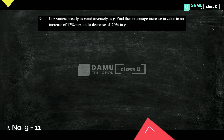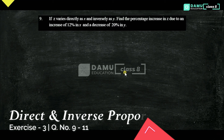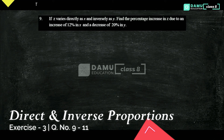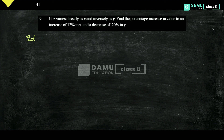Thanks for watching our videos. If you have not yet subscribed, please subscribe and click the bell icon. In this module we are going to discuss the ninth question solution: if z varies directly as x and inversely as y, find the percentage increase in z due to an increase of 12% in x and a decrease of 20% in y.